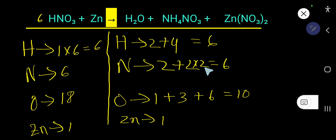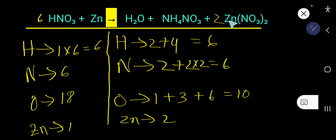The coefficient must come before the compound this nitrogen comes from, so we place 2 in front of Zn(NO₃)₂. Now: zinc is 2, nitrogen is 2 times 2 = 4, oxygen is 3 times 2 = 6, and 6 times 2 = 12. So we have 12 oxygen from Zn(NO₃)₂ plus 3 from H₂O, giving 15 or 16 total.